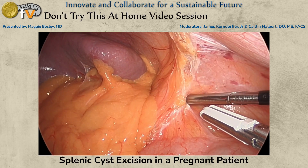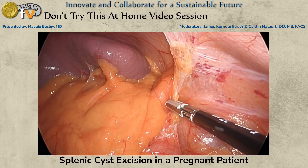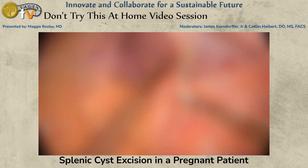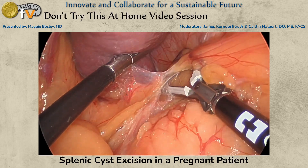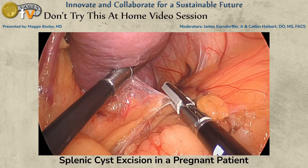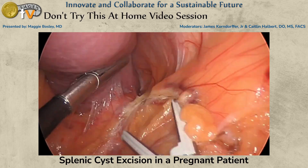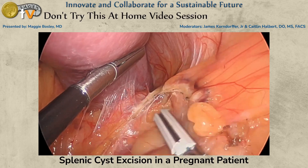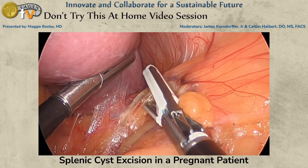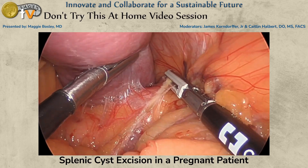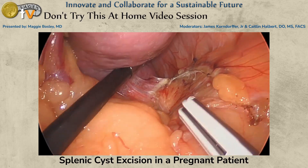After beginning the splenic flexure mobilization, we began the splenorenal ligament dissection. We wanted to fully mobilize the spleen in case we needed to gain control of the hilum and vessels quickly if we encountered any bleeding complications.